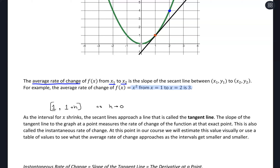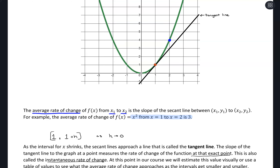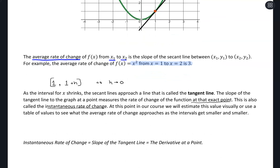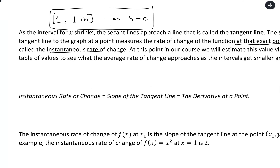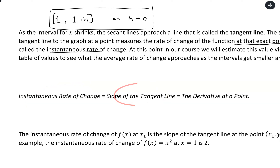The slope of the tangent line to the graph at a point measures the rate of change of the function at that exact point. This is also called the instantaneous rate of change. At this point in our course, we're just going to estimate visually — then the calculus will calculate it for us. These all represent the same thing: instantaneous rate of change equals slope of the tangent line, and eventually this will match with the derivative at a point.